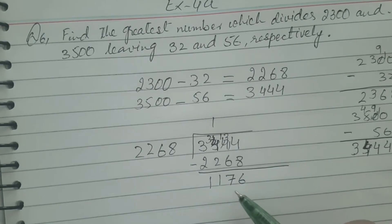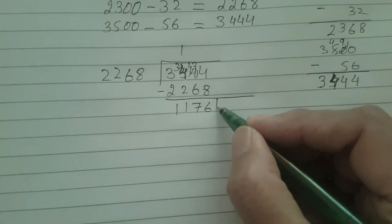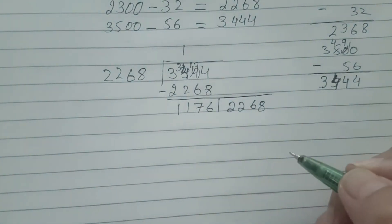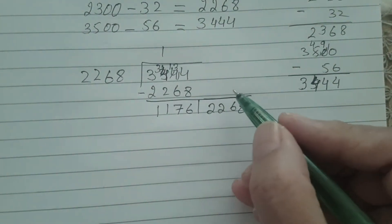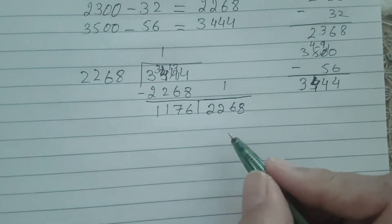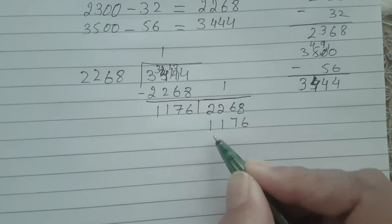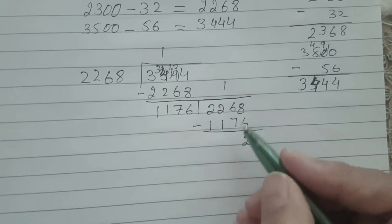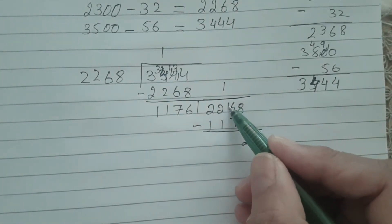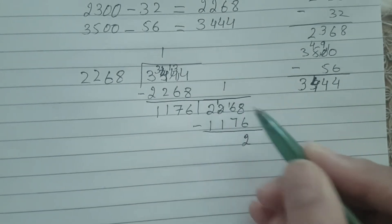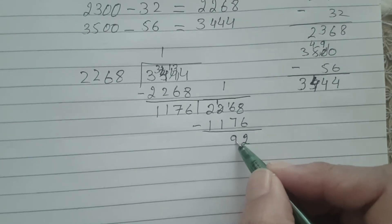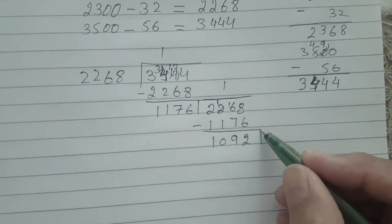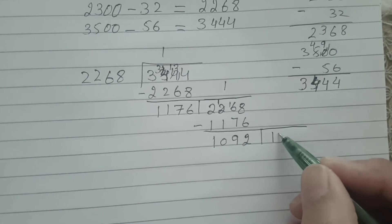Now this will be your next divisor and your dividend will be 2268, as in the long division process. Again one time gives you 1176. Do the subtraction: 8 minus 6 gives you 2, make it 16, 16 minus 7 is 9, 1 minus 1 is 0, 2 minus 1 is 1. 1092 is the remainder.